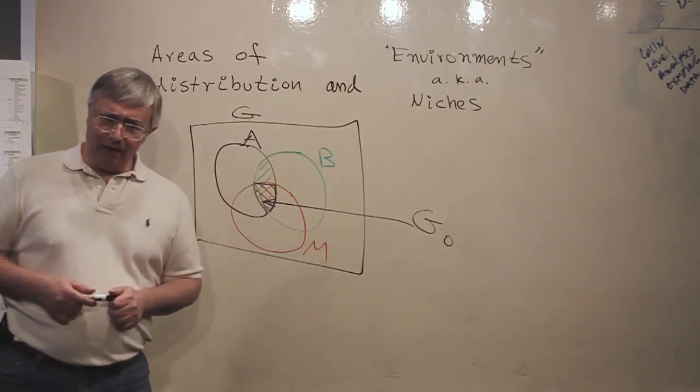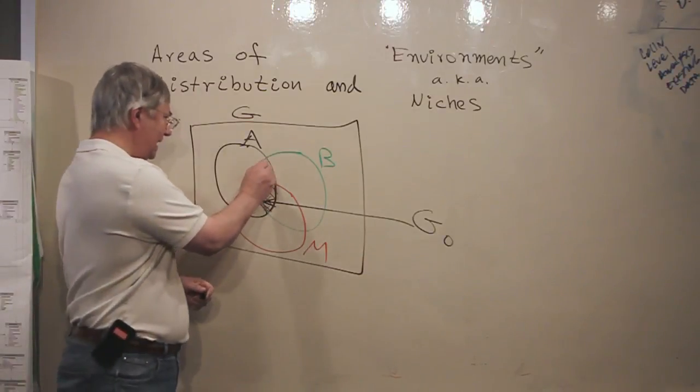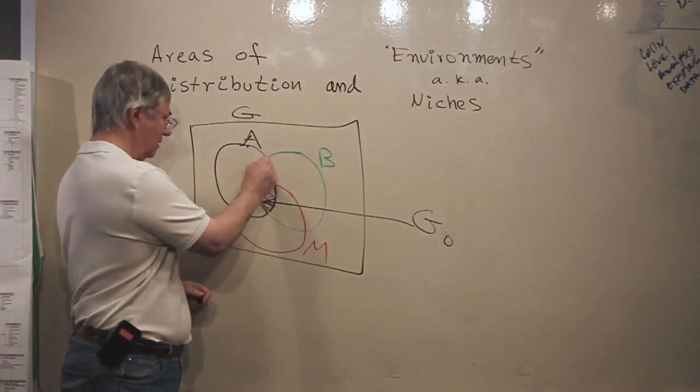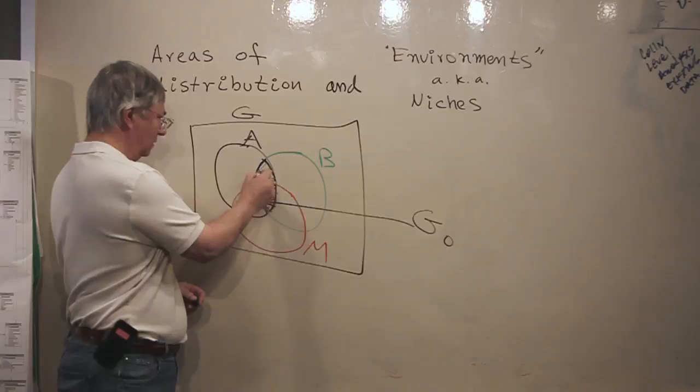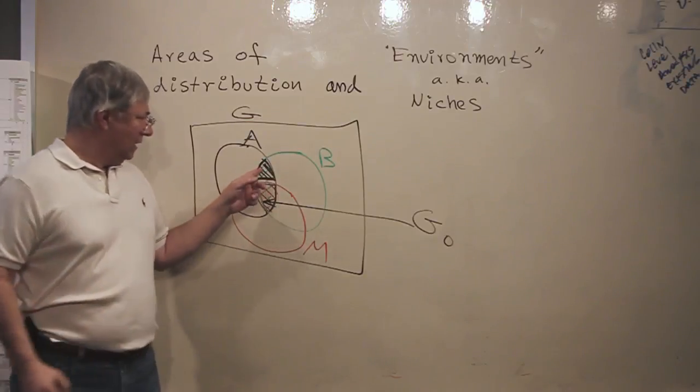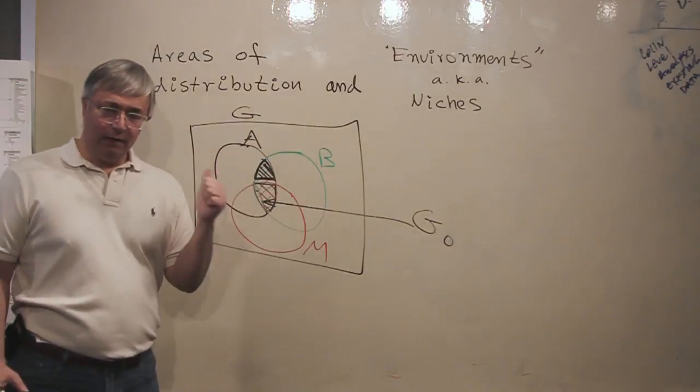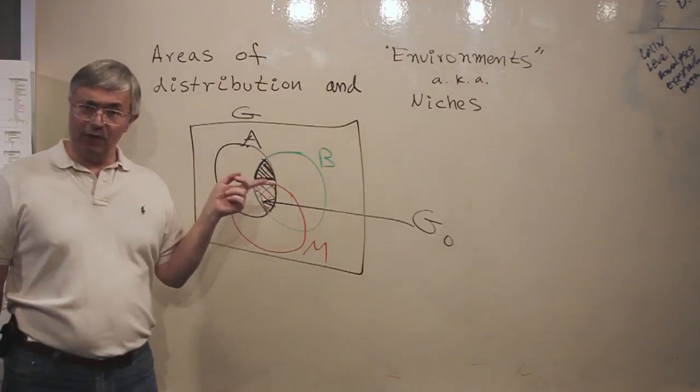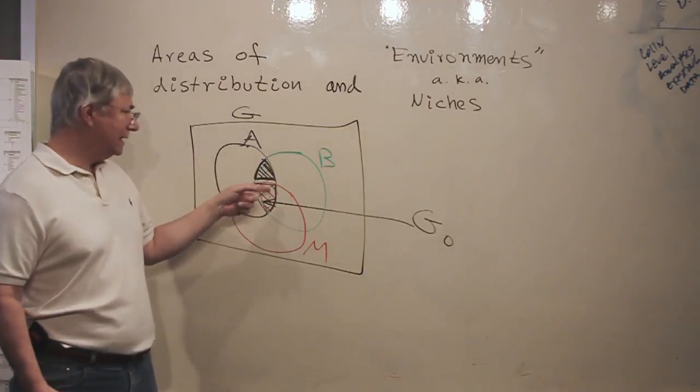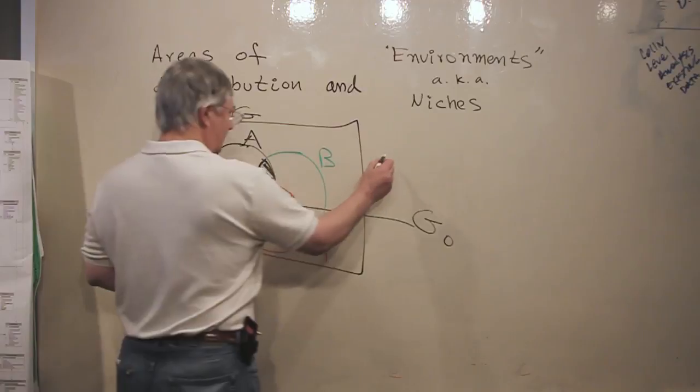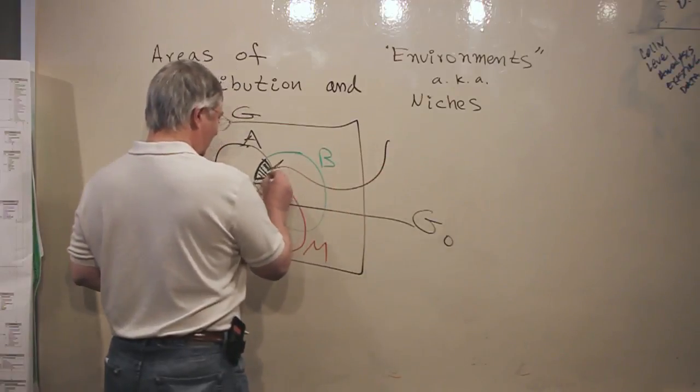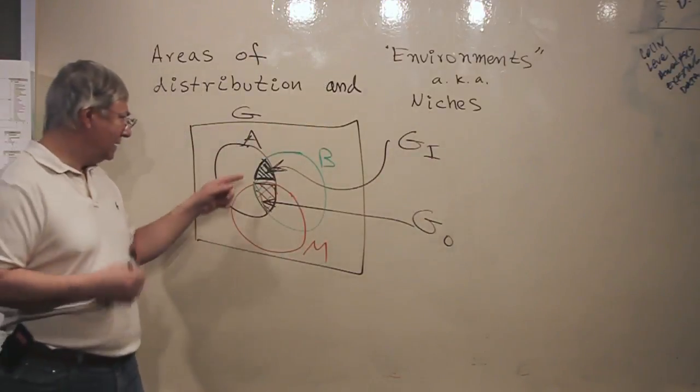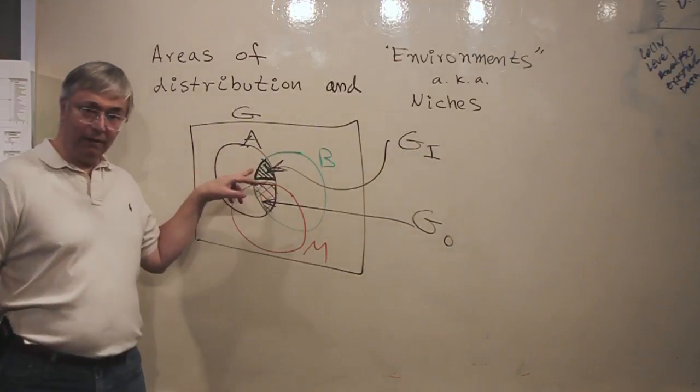But there is another area which is also quite interesting. This region here, which I'm going to mark with a slightly isolated triangle. This is an area which has the right abiotic conditions and the right biotic conditions, but is not occupied by the species. Why not? Because the species have not had the time to get there. And this is also an interesting area. So we're going to give it a name. This is the area that can be invaded by the species. And this is an area which is also very important to be able to model.